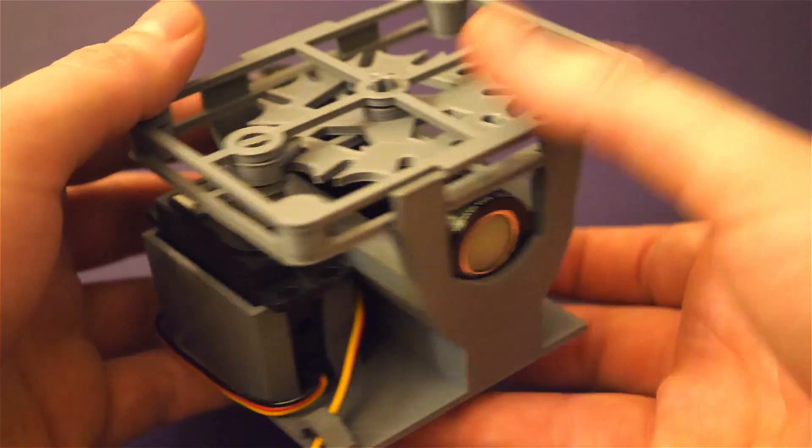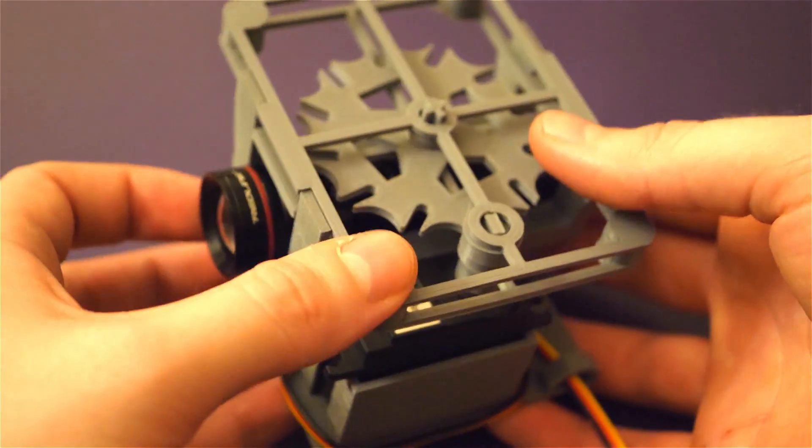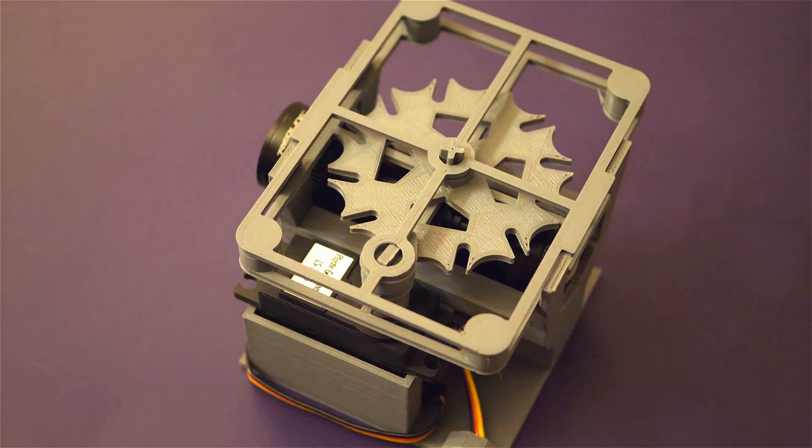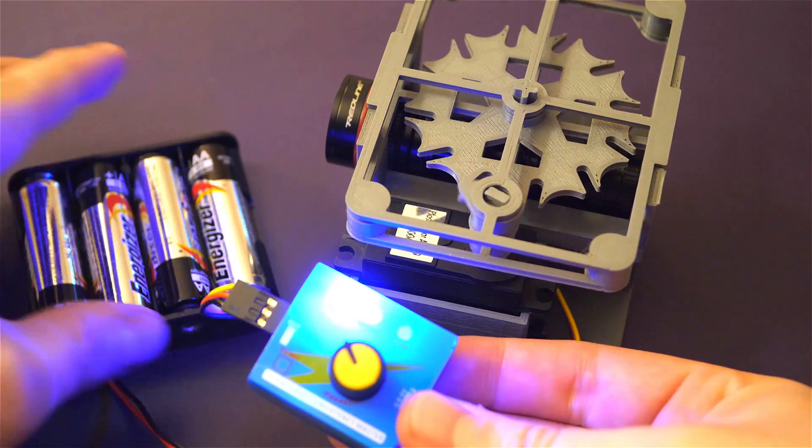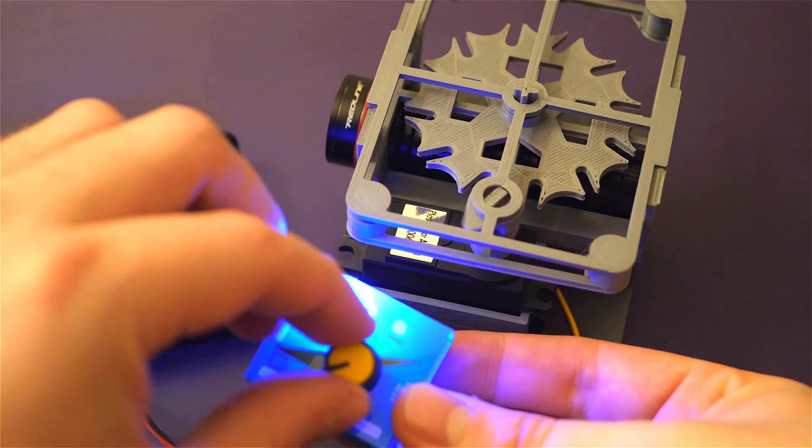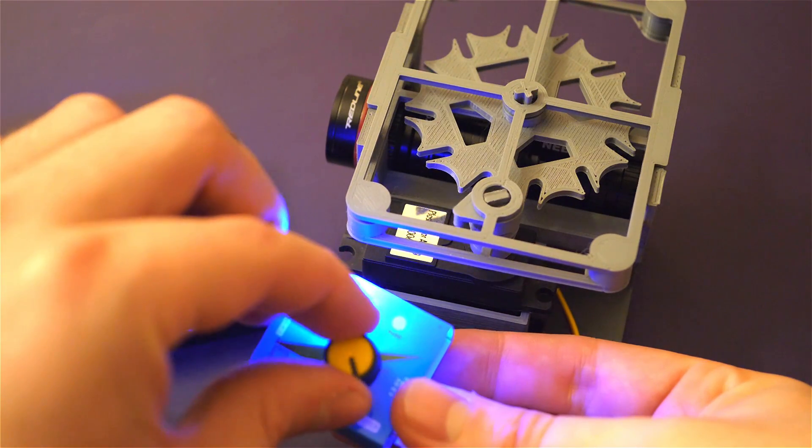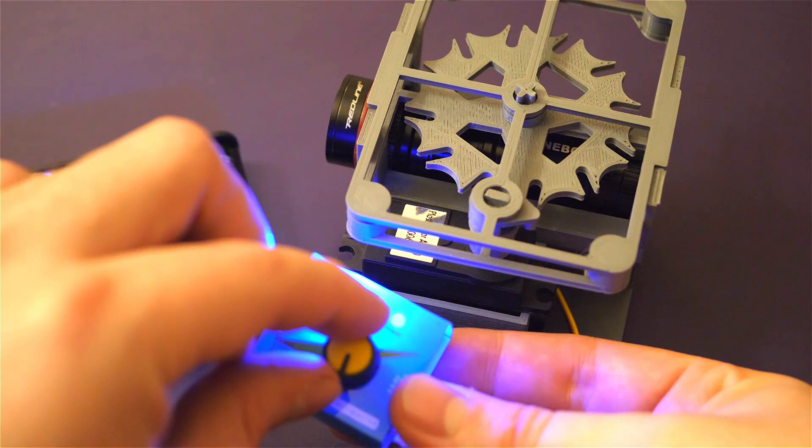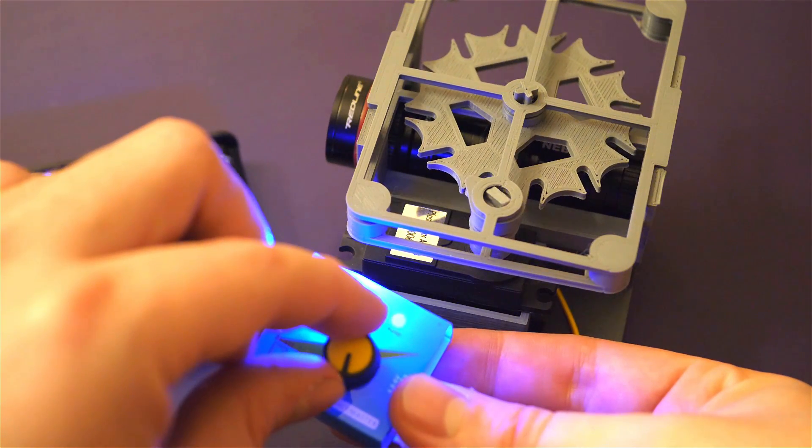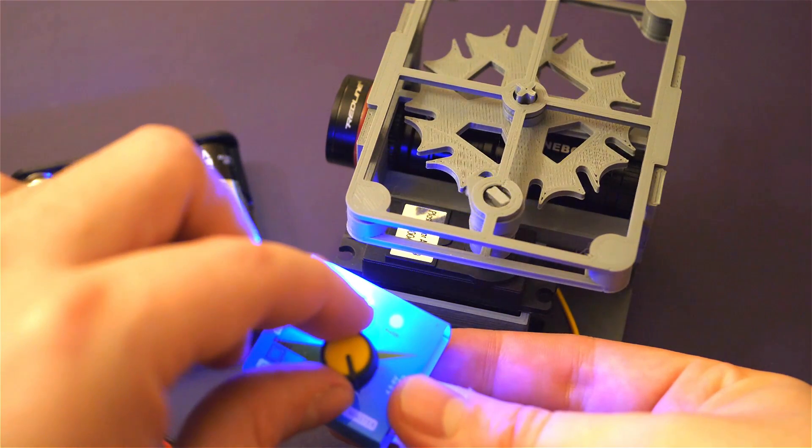Let's add the flashlight and give this a test run. Plug in the battery and let's hope this works. Not bad. The speed can be adjusted and the controller can make it spin forwards or backwards.